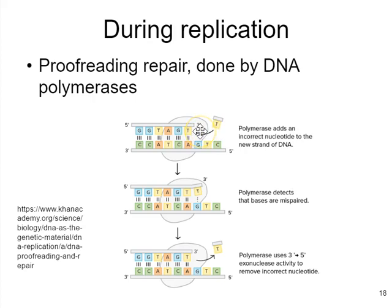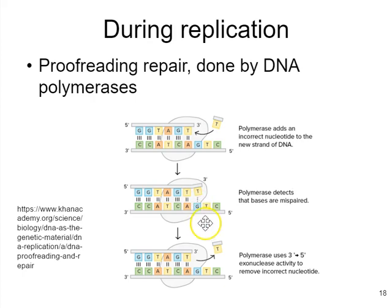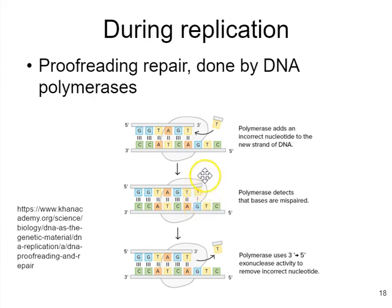From time to time, you'll have a faulty nucleotide being added, maybe due to tautomeric shift or some random event. If that T gets put in — which is incorrect — the DNA polymerase is able to detect that faulty base pairing. The way it detects this is that a G-T base pairing leads to a distortion in the double helix; the width of the double helix is incorrect at that position, and that triggers the DNA polymerase to stop.